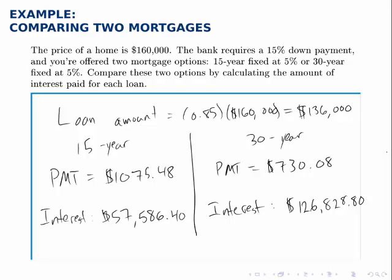So if possible, a 15-year mortgage is a better investment than a 30-year mortgage because the amount of interest you have to pay is so dramatically less. Because of this, though, if you go looking for mortgages, usually the 15-year mortgage will have a higher interest rate because the banks make so much less on interest with a shorter mortgage than they do with a longer mortgage.